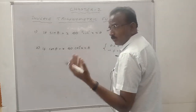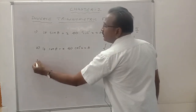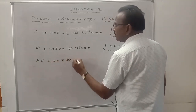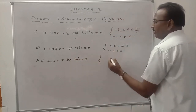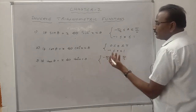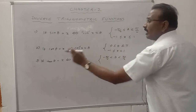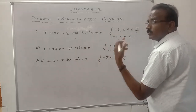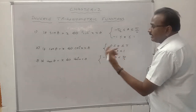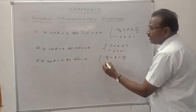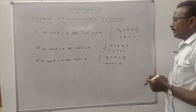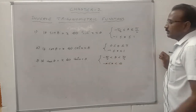For tangent: tan theta equals x if and only if tan inverse x equals theta, where theta lies in the open interval minus pi by 2 to pi by 2. The interval is open because tan of plus or minus pi by 2 is not defined. The x value lies between minus infinity and plus infinity, meaning the domain of tan inverse is the set of all real numbers.